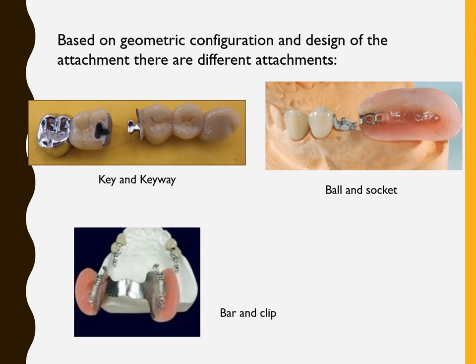Another important advance in removable partial dentures is using implant systems. Instead of a completely mucosa-based prosthesis, you can place two implants in the most distal area, convert the situation to a Kennedy Class III, and construct the prosthesis with implant support — giving far better outcomes than mucosa-supported dentures alone.